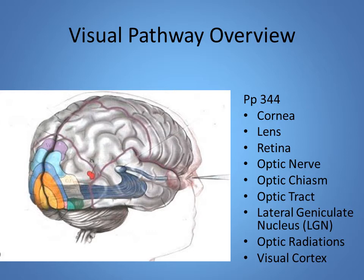If a child loses vision when they're very young, they might be able to adapt rather well. But if we lose our sight later in life, this can be very devastating to our independence, and it takes an occupational therapist using some really creative adaptation to help someone with low vision or no vision learn to function in their world. There is a schematic of the entire pathway starting from the cornea, where we first take in light, all the way to the visual cortex where we process this information.